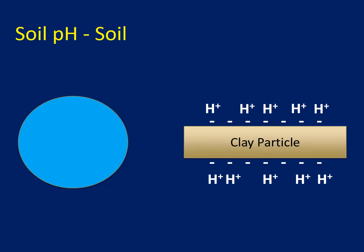When that acidity is removed from the soluble portion, the hydrogen ions bound to the clay particle can migrate into the soluble portion. The acidity bound to the soil helps replenish the soluble acidity. This is important because when we send soil samples for pH analysis, the lab will first test just the soluble acidity. If the pH comes back low, they'll do an additional test — often called a buffer pH analysis — to determine the entire acidity, including what's tied to the clay particles.